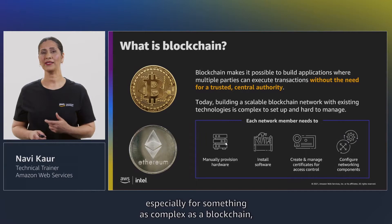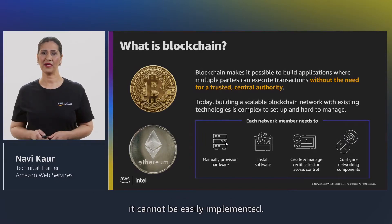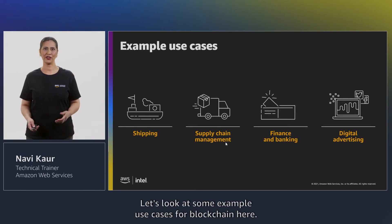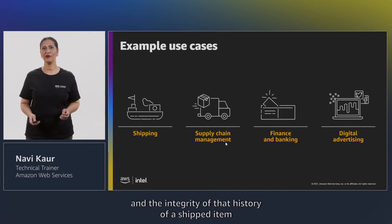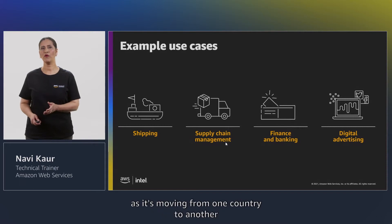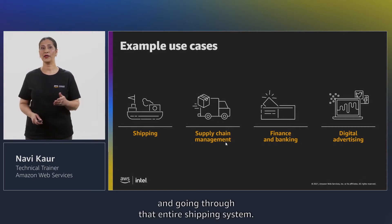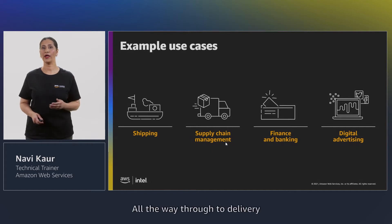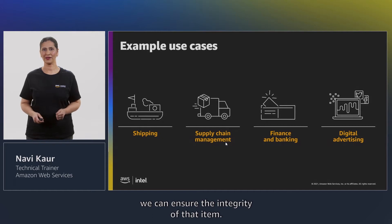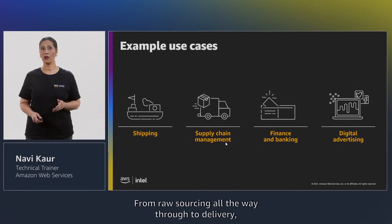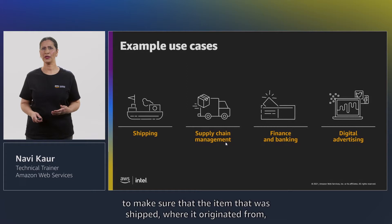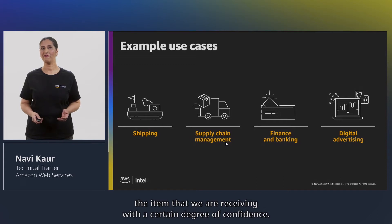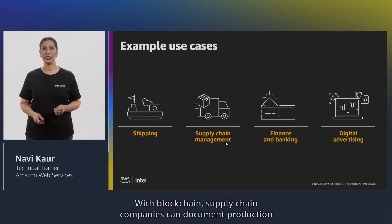None of these are insignificant, especially for something as complex as a blockchain. Let's look at some example use cases. In shipping, blockchain can be used to ensure the entire history and integrity of a shipped item as it moves from one country to another through the entire shipping system all the way through to delivery — ensuring the integrity of that item from raw sourcing all the way through, with the ability to independently audit and verify the entire journey.